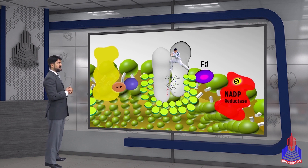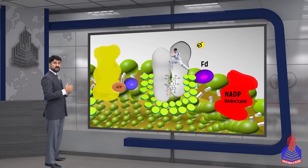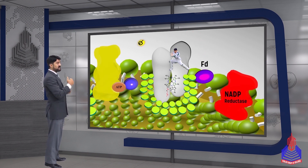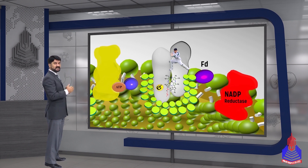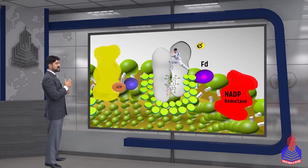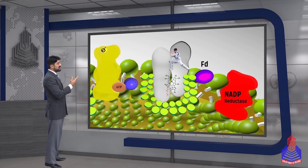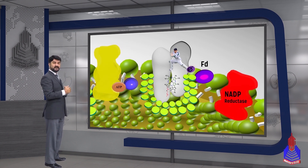But it is possible that under a few circumstances, ferredoxin does not give its electron to NADP. Instead, we have changed the pathway — the electron from ferredoxin does not go to NADP but will return via cytochrome. This is the cyclic pathway.